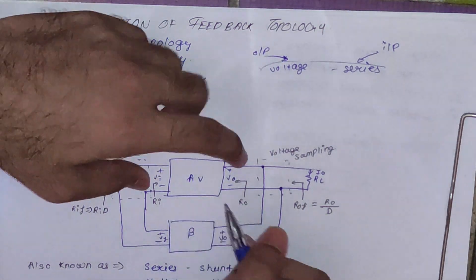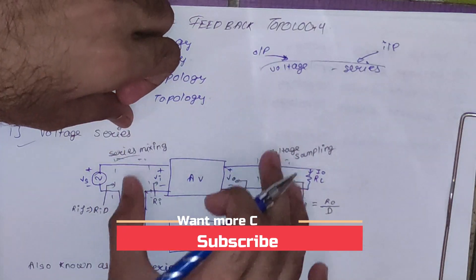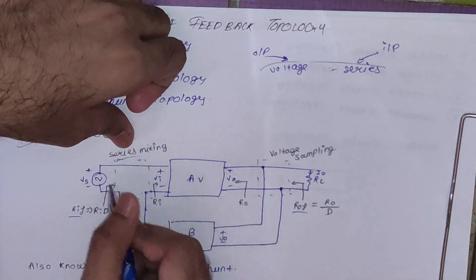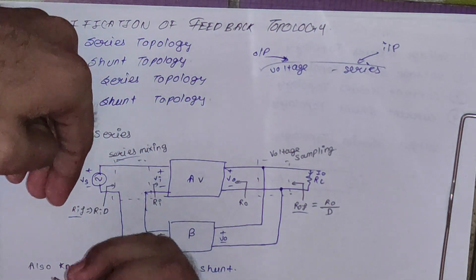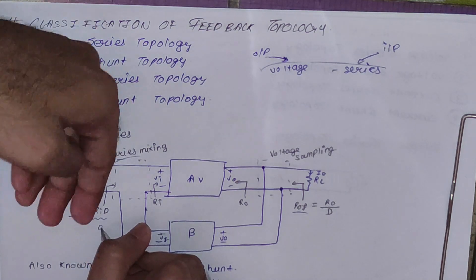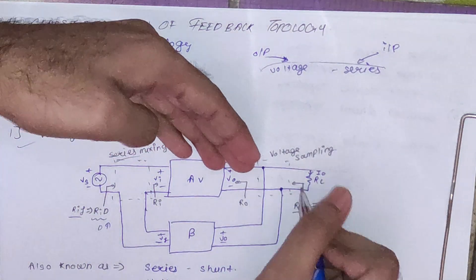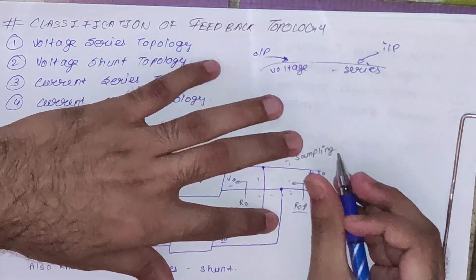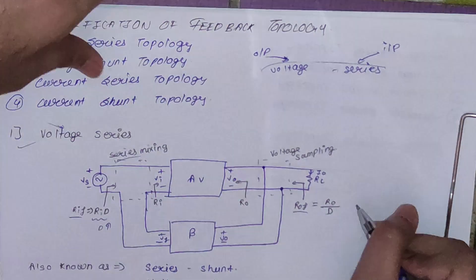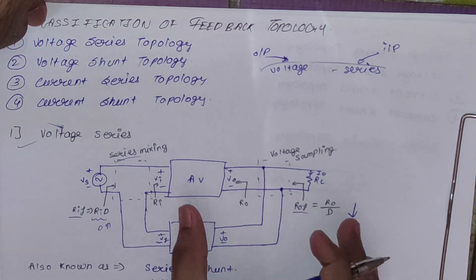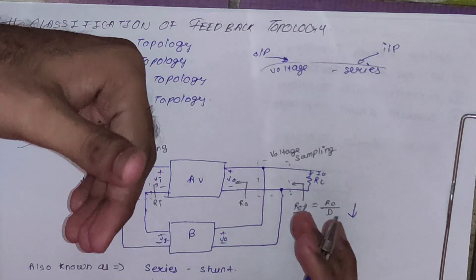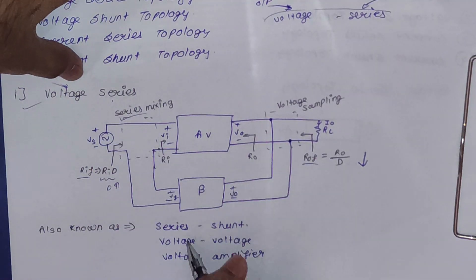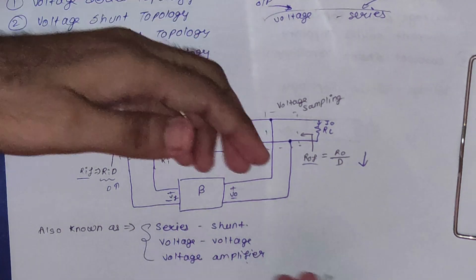For the voltage-series topology, Ri and Ro are the open-loop resistances, while RiF and RoF are the resistances with feedback. Since mixing is in series, the input resistance increases — RiF equals Ri multiplied by the desensitivity factor D = (1 + A·beta). Since voltage sampling connects a shunt at the output, the output resistance decreases — RoF equals Ro divided by D.